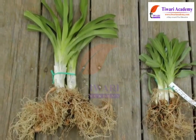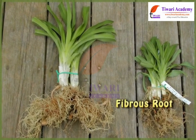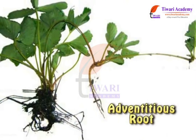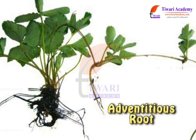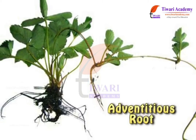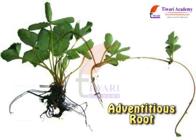Some plants have small thread or fiber-like roots. Such roots are called fibrous roots. Plants having parallel venation have fibrous roots. Adventitious root or lateral root is a root that arises from any part of the plant other than the primary root, radicle, or its branches.